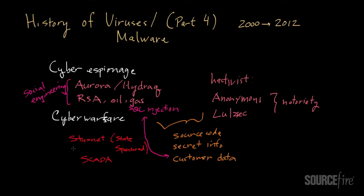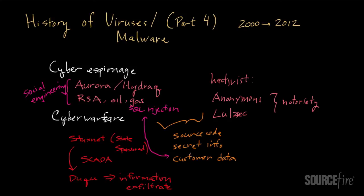A little bit after Stuxnet came out there was a new threat discovered called Duqu. It was identical to Stuxnet in many regards, although it appears to have a different purpose — really designed to do what's called information gathering and information exfiltration. The idea is to gather interesting information and then exfiltrate it, sending it out to somebody who might be able to make more use of it, presumably to facilitate future attacks similar to Stuxnet.